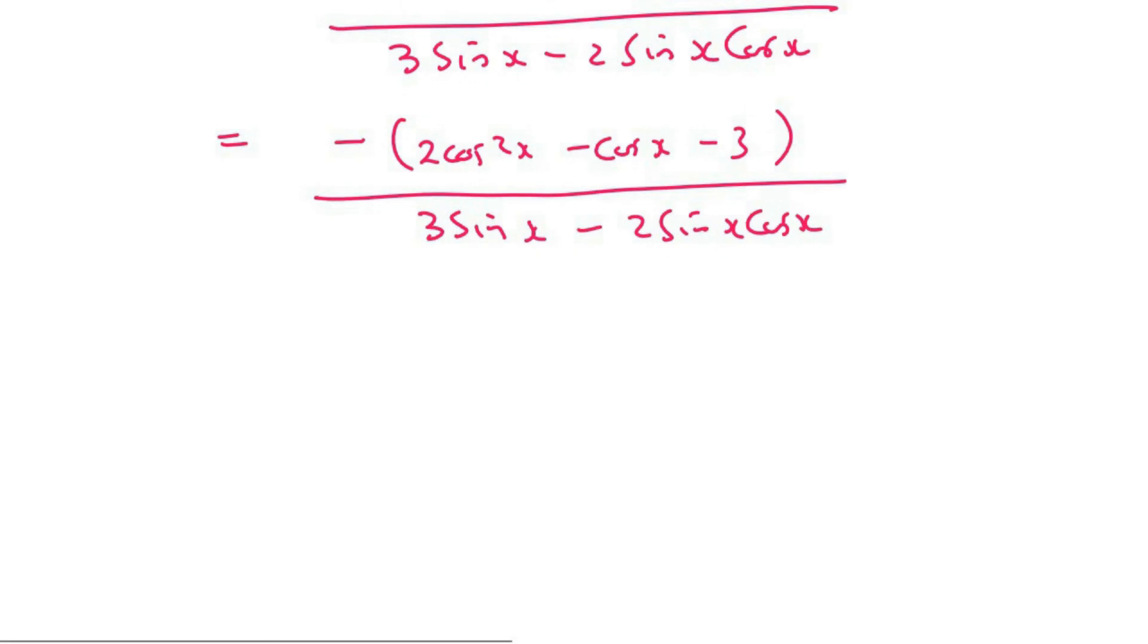Now let's have a look. So you can do multiple different things here. You can let this negative rather be at the bottom. So then what you would end up with is 2 cos²x minus cosx minus 3. And then you flip this one around. So it becomes 2 sinx cosx minus 3 sinx.